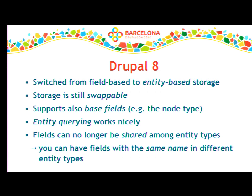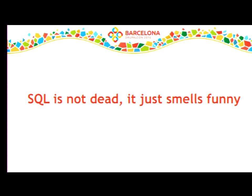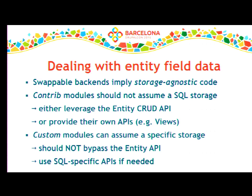Now let's talk about the recommended ways to deal with swappable storage. Swappable storage means we cannot assume we will always deal with SQL anymore. Swappable backends require different approaches depending on whether we are dealing with contrib or custom code. For contrib code, we should never assume SQL storage because we have no control on what storage is configured for our entity types, so we should try to leverage the entity query API every time we are accessing entity data.